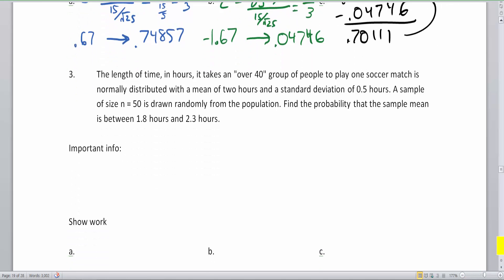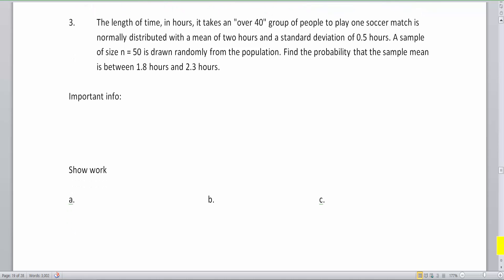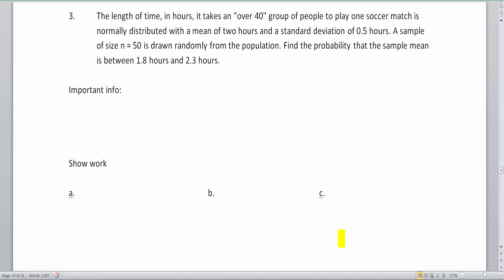Okay, so the final one of this video here to end video number two in my series for the CLT, the Central Limit Theorem, we are going to take a look at this time in hours. It takes an over 40 group of people to play one soccer match. And it looks like the average is about two hours and the standard deviation is about a half an hour. So, this is important because if people have rented time in the soccer arenas, they're going to want to maybe budget for three hours.